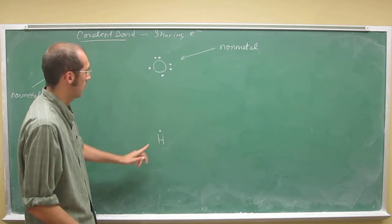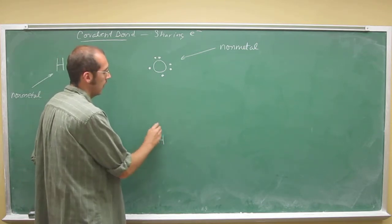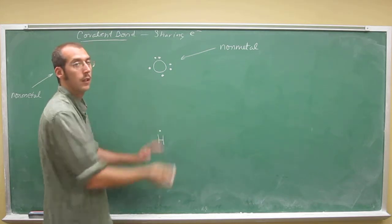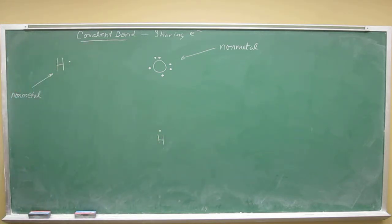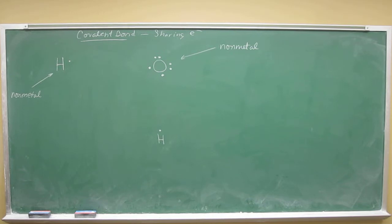So again, we can draw these Lewis structures with the dot here, here, here, here, whatever is the most convenient to build your molecule. So since we've got these two nonmetals coming together, we're going to form a covalent bond like we said.